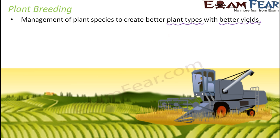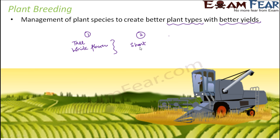In plant breeding, a mix-and-match technique is followed. That is, desired traits are selected from the plants and then the plants are allowed to mate with each other. Plant breeding is done based on desirable traits. For example, suppose you have one plant which is tall and has white flowers — that is your first set of plants — and another plant which is short, very dwarf, and has red flowers.